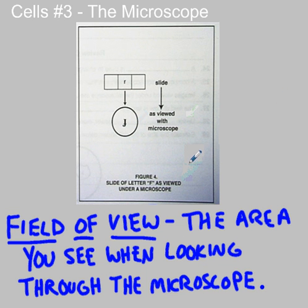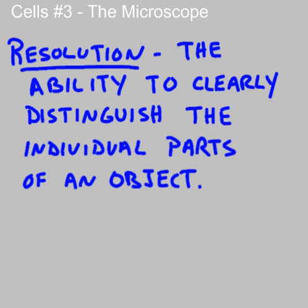Field of view is the area you see when looking through the microscope. We can also talk about resolution — this is the ability to clearly distinguish the individual parts of an object. You can think of resolution as the sharpness of the image. A microscope increases both magnification and resolution. A high-resolution television, like a high-def TV, would have the sharpest image.